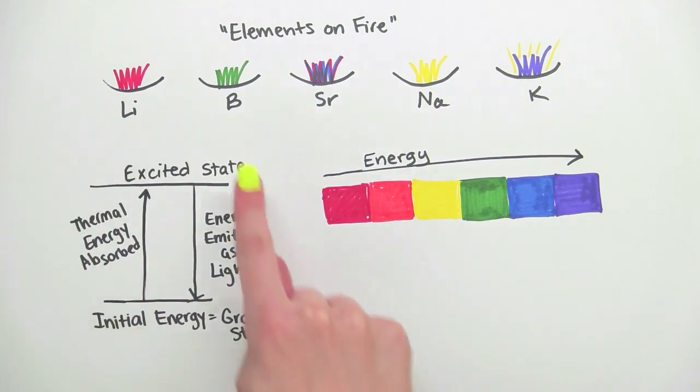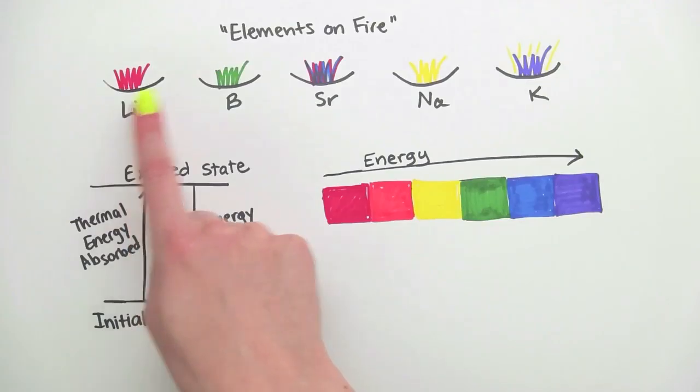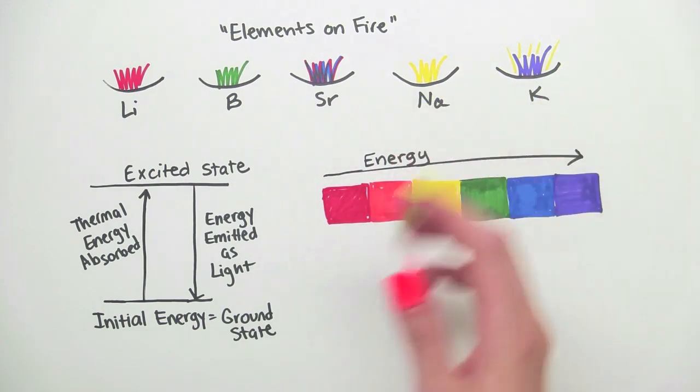And this is a simplified picture of what's happening. Each element has a unique set of excited states, which each leads to a different pattern of light, which we see as red, green, yellow, etc. Hope you enjoyed the video and I'll see you next time.